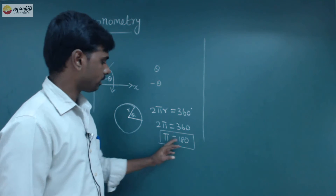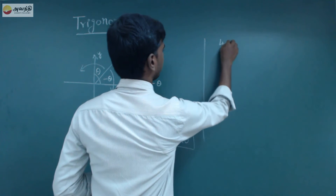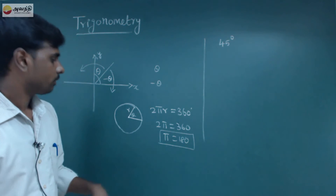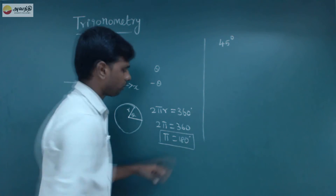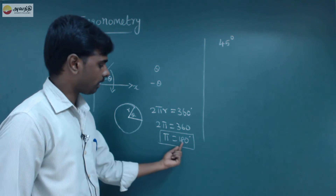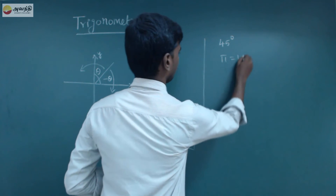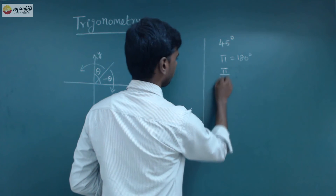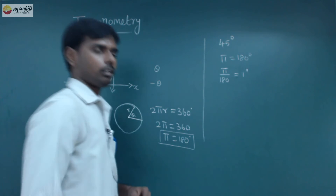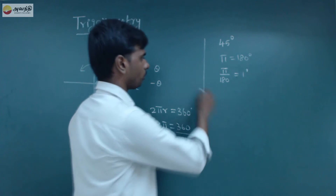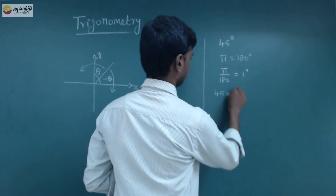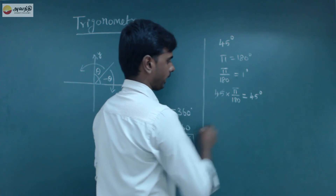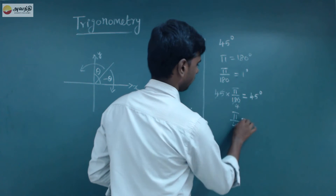We can calculate radians using the formula. For example, π equals 180. Now, for 45 degrees, we can calculate the radian value. Since π divided by 180 equals 1 degree, to find 45 degrees we multiply both sides by 45: 45 times π divided by 180 equals 45 degrees. Cancelling, 180 divided by 45 is 4, so π divided by 4 equals 45 degrees.